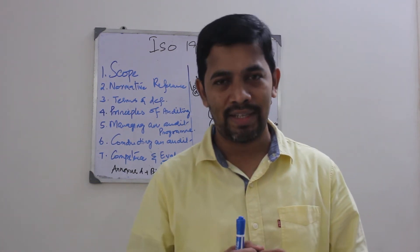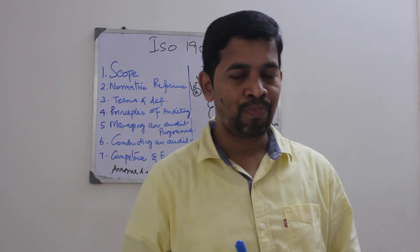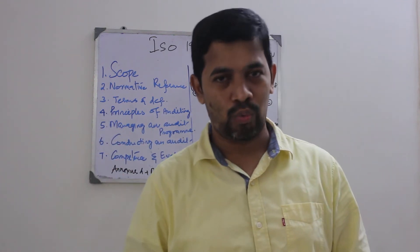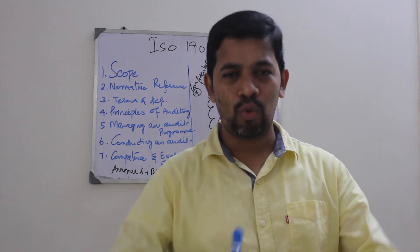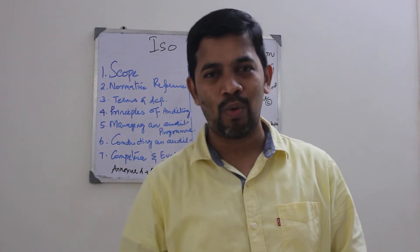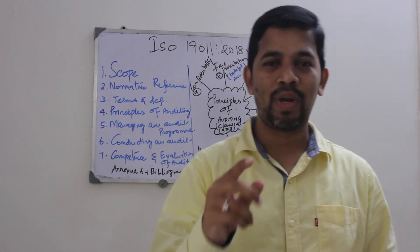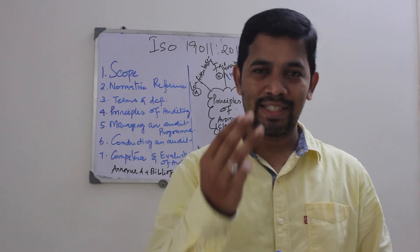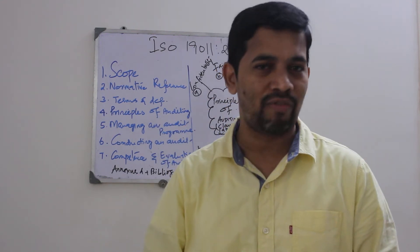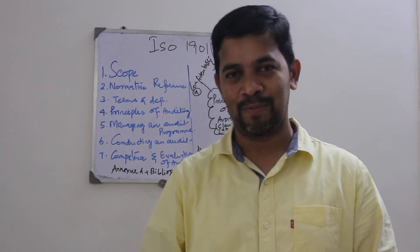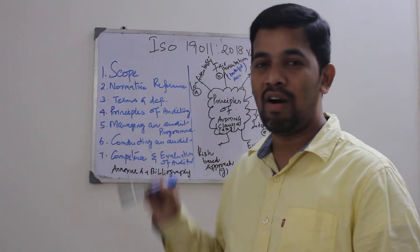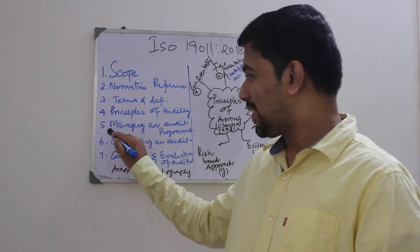In part four of this video, we are going to talk about the fourth clause — the principles of auditing. Just to give you an overall overview of the entire clauses, there are seven clauses in ISO 19011. Clause number one is scope, clause number two is normative references, clause number three is terms and definitions, and clause number four is the principles of auditing, which we are going to cover in detail today.